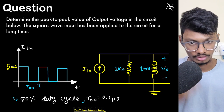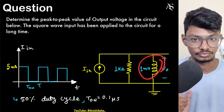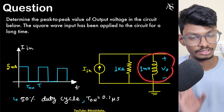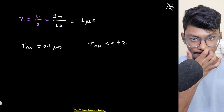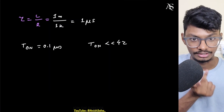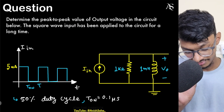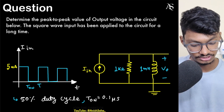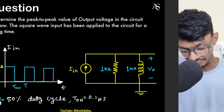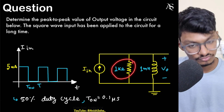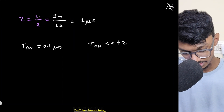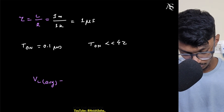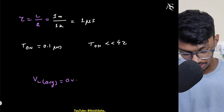At steady state the current through the inductor is constant, so the average voltage across the inductor will be zero over a time period. If the average voltage is zero, then V_L_average equals zero.